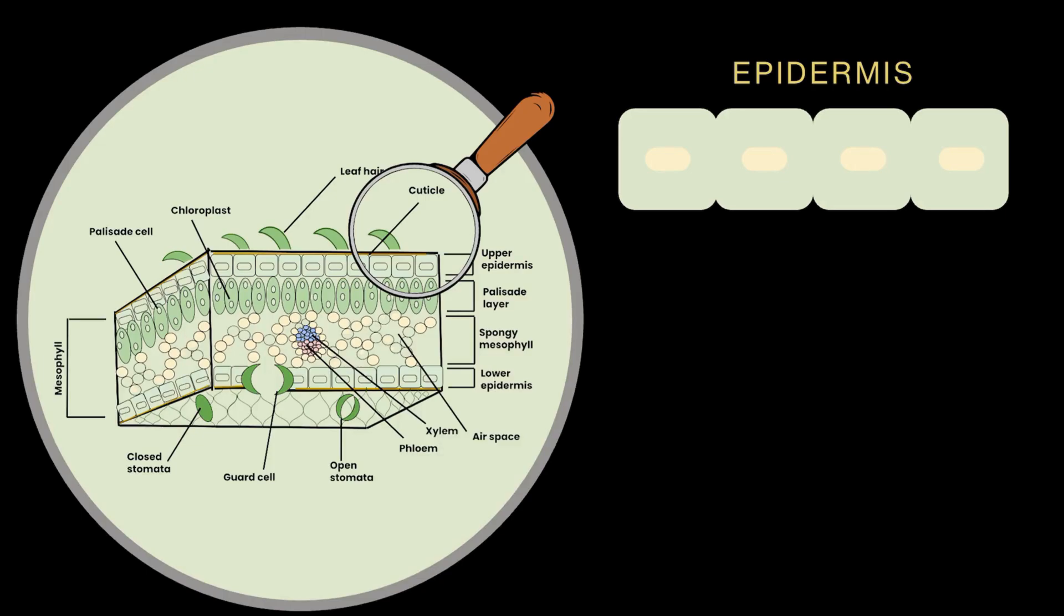You see, the cells of the epidermis, they are flat. They are flat like little tiles and you see little tiles on a bathroom wall. They fit together snugly without leaving any gaps in between. And very similarly, the cells of the epidermal layer are packed tightly without any intercellular space.